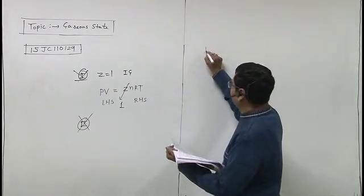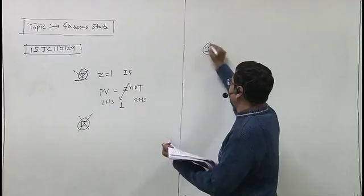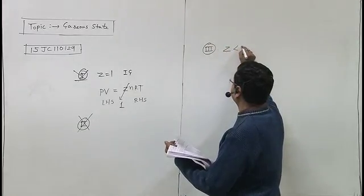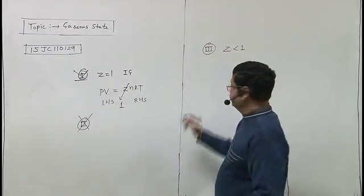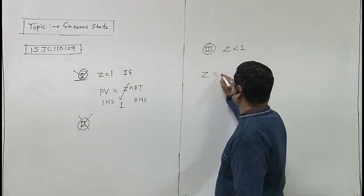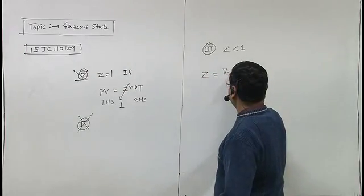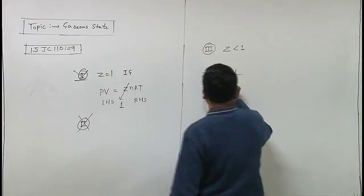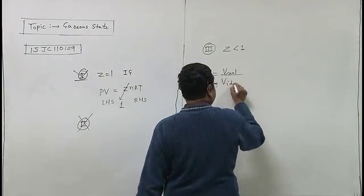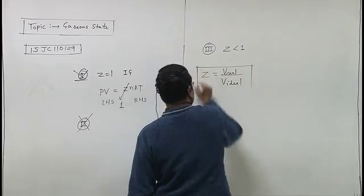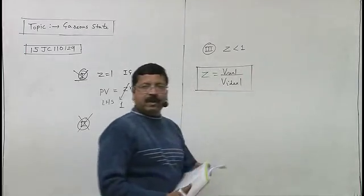Third, Z compressibility factor less than 1. Now Z, the formula is volume of real gas over volume of ideal gas under the same condition of pressure and temperature and the same amount of the gas.